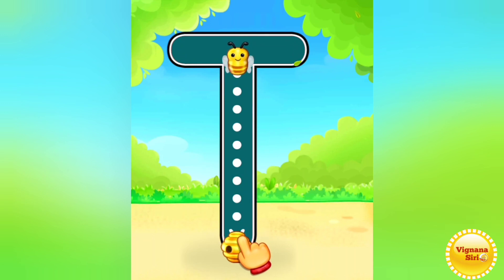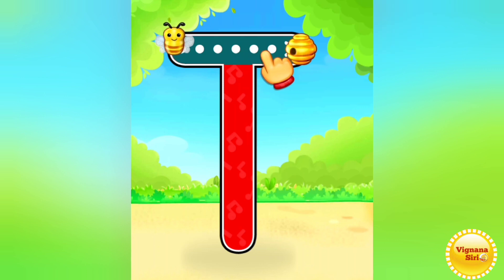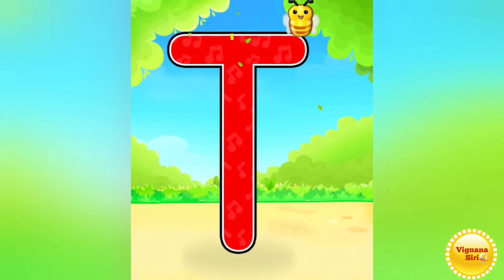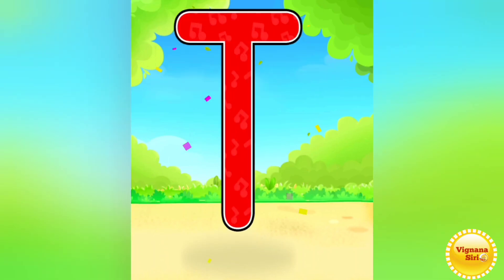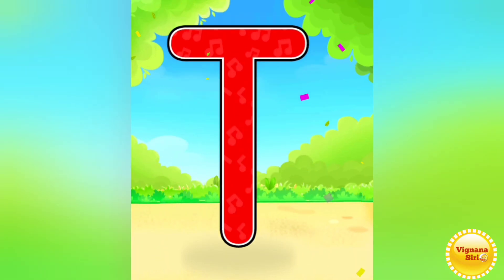So see the hand here. It is showing a standing line and above that a sleeping line. So what is this letter called? It's the capital letter T. Got it? Nice.